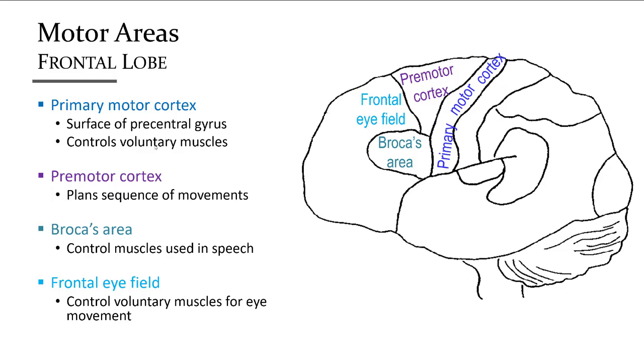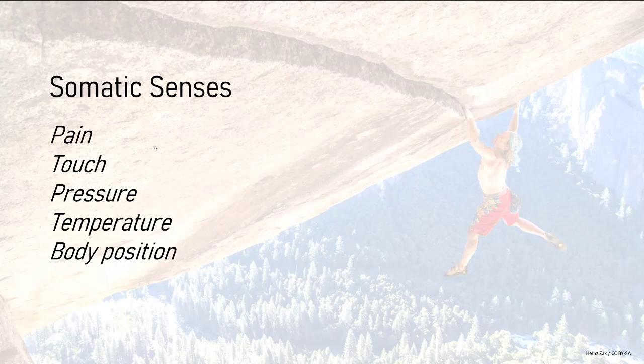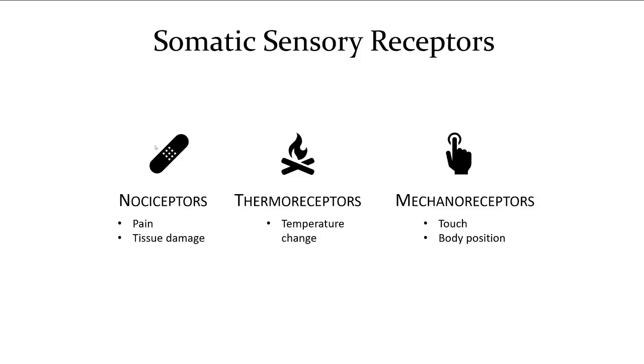Now let's look at sensory processing centers. There are many regions of the brain where sensory information is directed and interpreted so that we can be aware of the world around us. The three main sensation types we will map out are somatic sensations from the body, vision, and hearing.